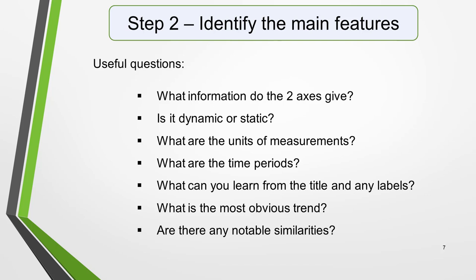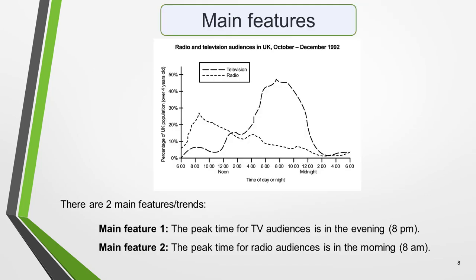You'll find a link to this in the notes below this video. So what main features stand out in our practice graphic? Here's our line graph again. The timeline will give you the biggest clues as to the significant trends — look for general trends. The two main features in this line graph are: Main Feature 1, the peak time for TV audiences is in the evening at 8pm, and Main Feature 2, the peak time for radio audiences is in the morning at 8am.